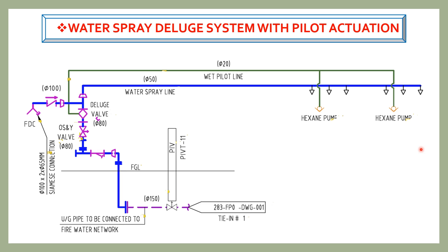The network is connected from the pump room through underground piping equipped with an underground gate valve and post indicator, then connected to the above-ground deluge piping. Before the deluge valve, a gate valve and a strainer are installed to ensure clean water flow and to facilitate maintenance. Another gate valve can be used above the deluge valve. The FDC connection links to the deluge network, and a check valve must be used in the FDC line.